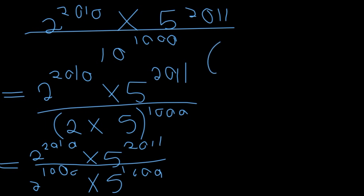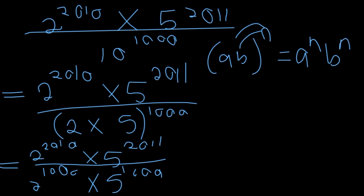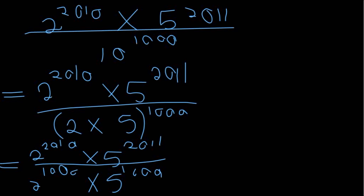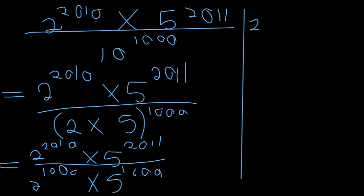I've used the rule that when you multiply two terms and raise them to an exponent, the exponent can be distributed — so (a × p)ⁿ = aⁿ × pⁿ. Now dividing powers of the same base by subtracting exponents: 2 to the power of 2010 divided by 2 to the power of 1000 gives 2 to the power of 1010. Then 5 to the power of 2011 divided by 5 to the power of 1000 gives 5 to the power of 1011. So the final answer is 2^1010 × 5^1011.